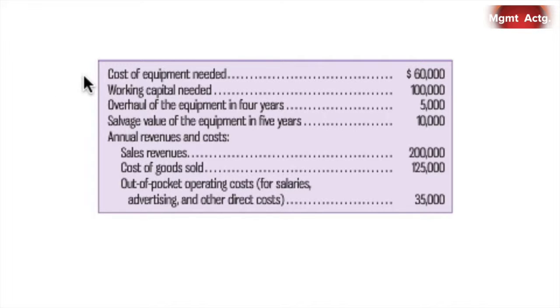Here is our setup. We can buy some equipment, which is $60,000. For the project we're undertaking, we would need an increase in working capital of $100,000. The equipment requires a cash outflow in four years of $5,000, and in five years you can sell that equipment for $10,000. These are all of the outflows, and here are all of our inflows.